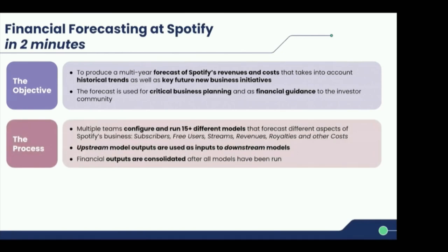Unfortunately this process has organically evolved over the years into a bunch of heterogeneous processes across many different teams. Spotify is a complicated company — many products, many markets, music licensing — and expertise is scattered across domain experts. As it stands, this process takes about three to four weeks every quarter, spans as many as eight different teams working in silos, with some pieces being Excel models. Teams hand off Google Sheets to each other — for example, subscriber numbers feeding into revenue projections.